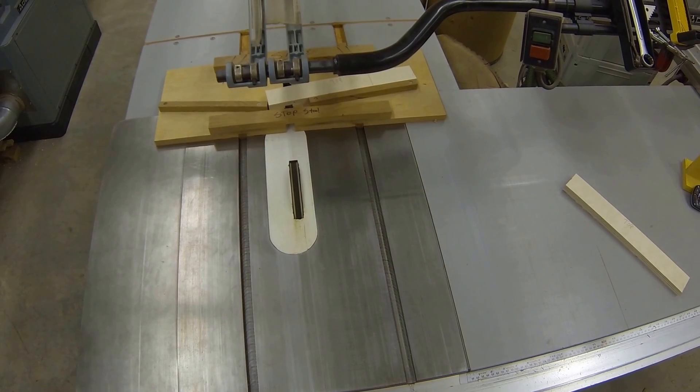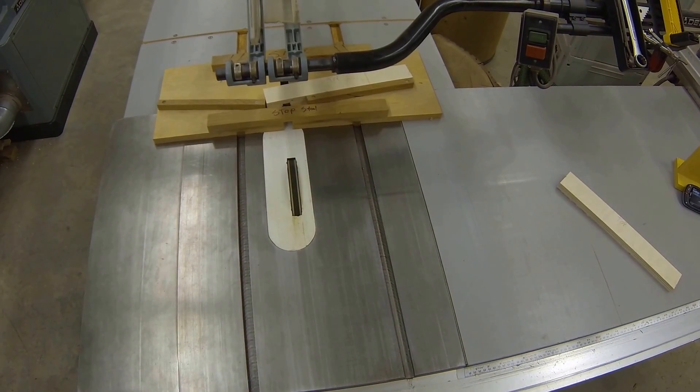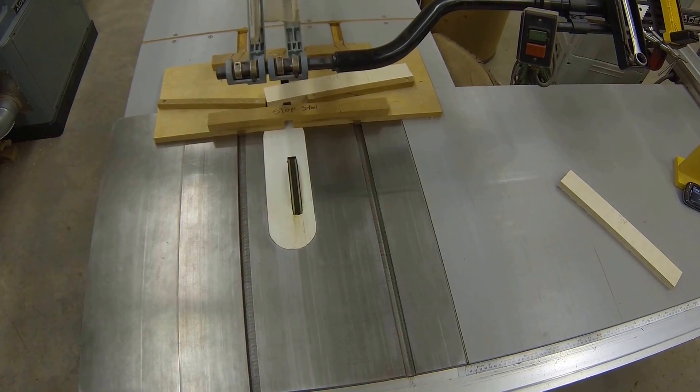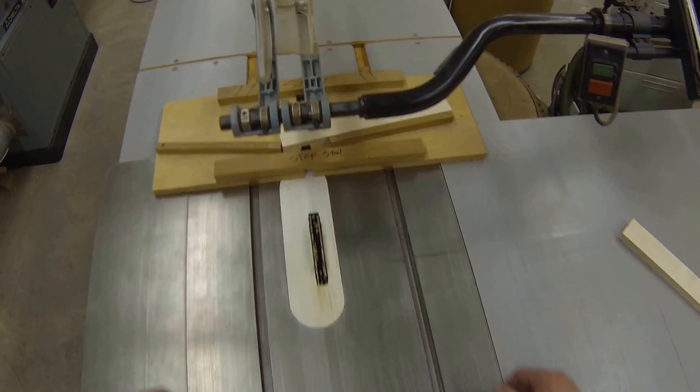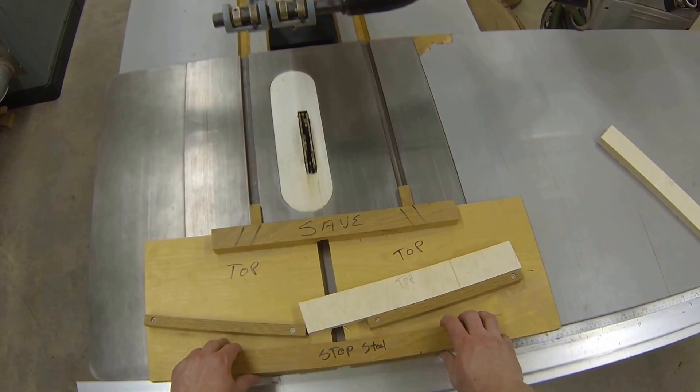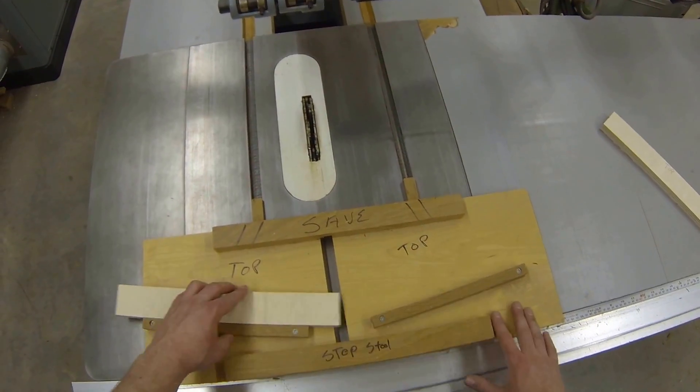Let it come to a complete stop. Never reach in next to that blade when the machine is running. Once it's at a complete stop, I can slide this back and proceed to do the next cut. Once that blade comes to a complete stop again, I can retrieve my sled and the part.